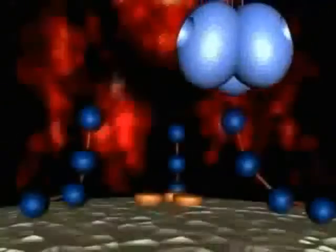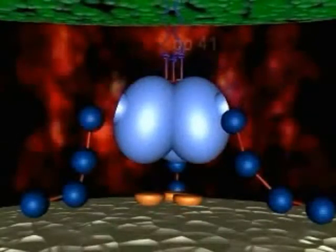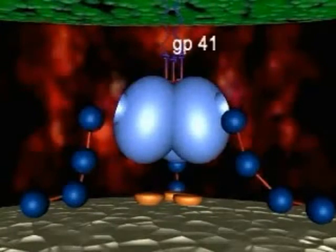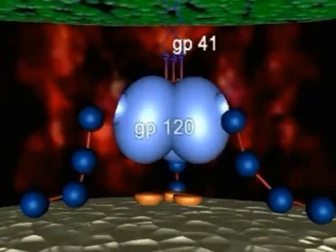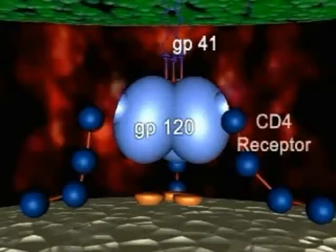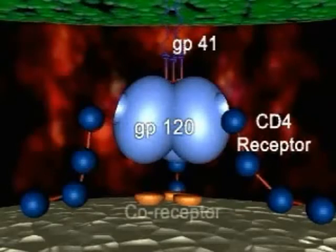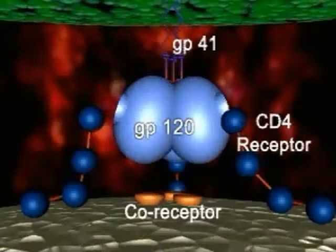Each spike is a trimer of a viral glycoprotein complex composed of a transmembrane glycoprotein, GP41, and a large surface glycoprotein, GP120.